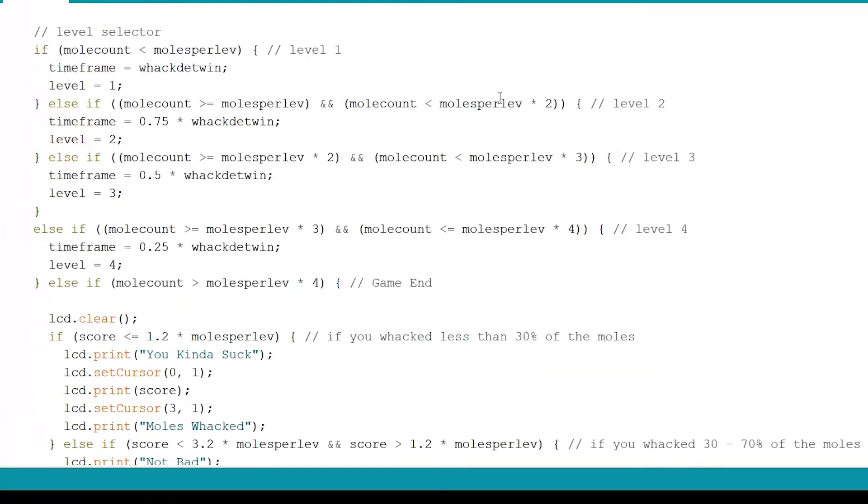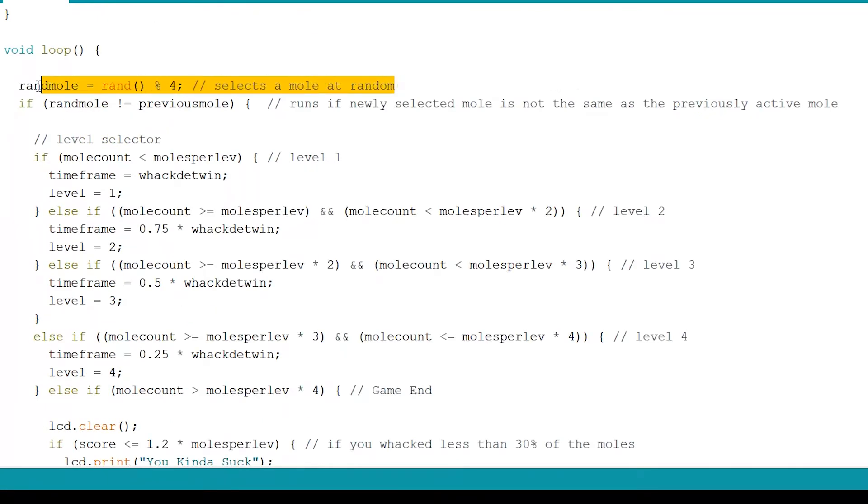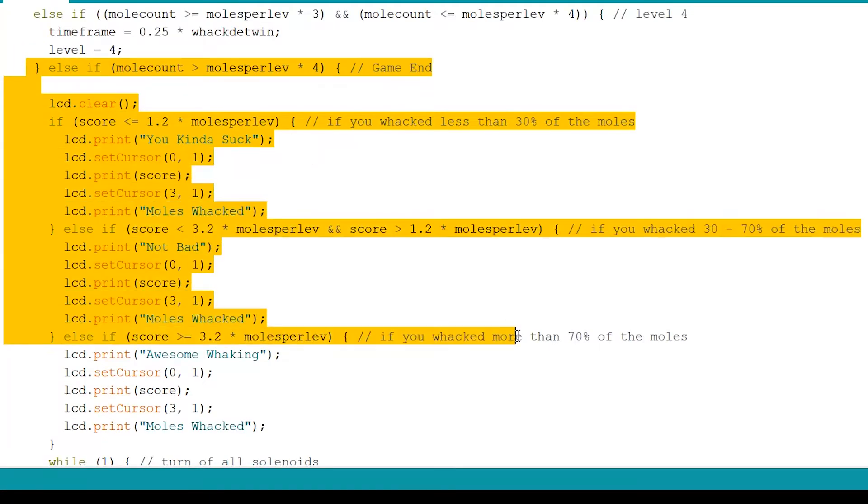The code for controlling the game is pretty short and easy to understand, but let me quickly go through the main functions of the loop. So the first thing I do is generate a random number from 0 to 3. This number will be used to activate the moles at random. The next line is an if statement that checks to make sure the same number is not used consecutively. This section of the code sets the maximum time allowed to whack a mole, depending on the level you're currently playing at. There are four levels in total, and each one is a 25% increase in speed from the previous level. At the end of the last level, there's a bunch of if statements that checks how many moles were whacked, and then outputs the appropriate message to the LCD.